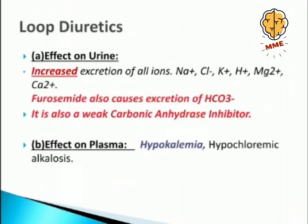Loop diuretics and their effect on urine: they cause increased excretion of all ions — sodium, chloride, potassium, H+, magnesium, and calcium. Furosemide also causes excretion of bicarbonate ions, as it is a weak carbonic anhydrase inhibitor. This is an important point: furosemide is a weak carbonic anhydrase inhibitor.